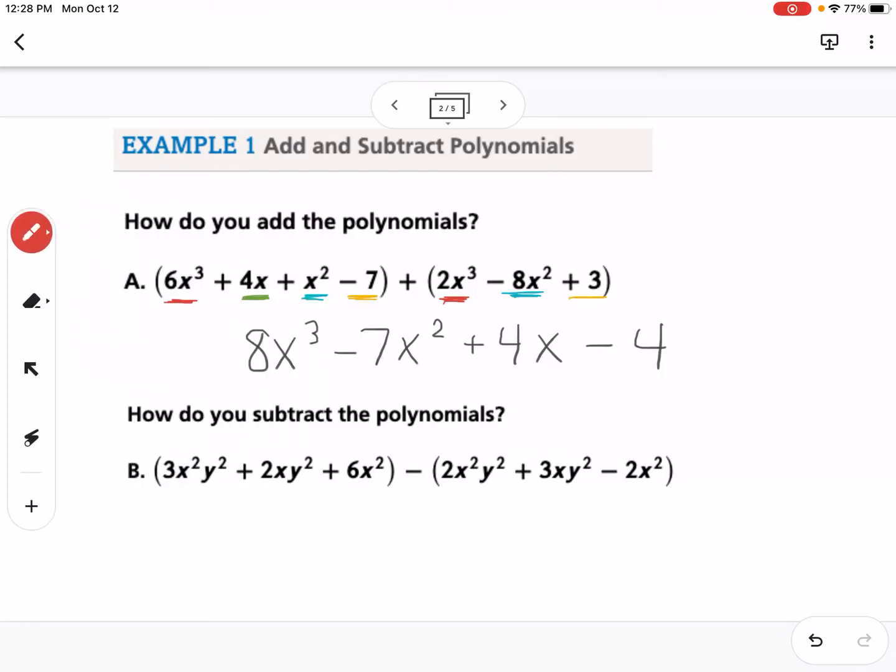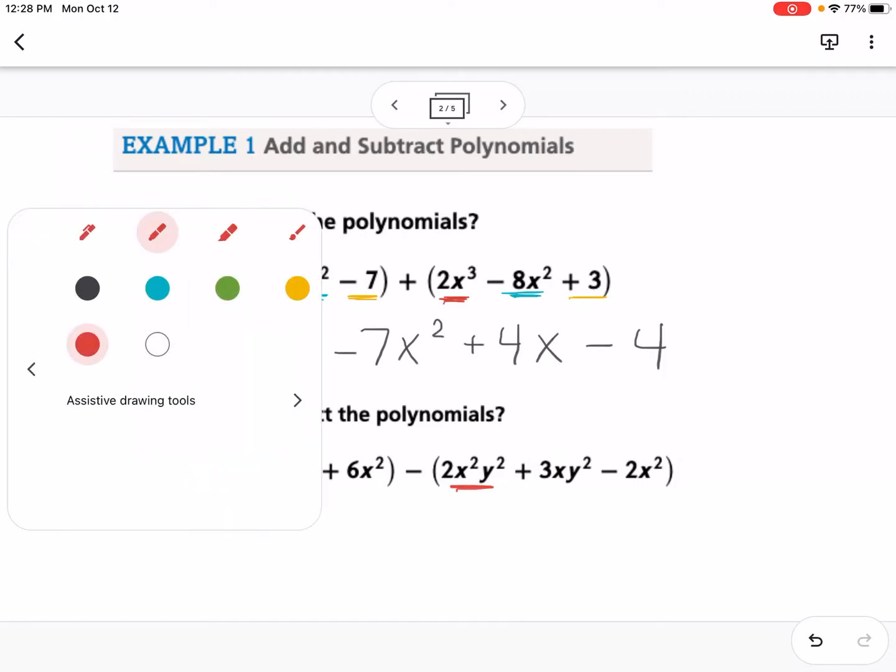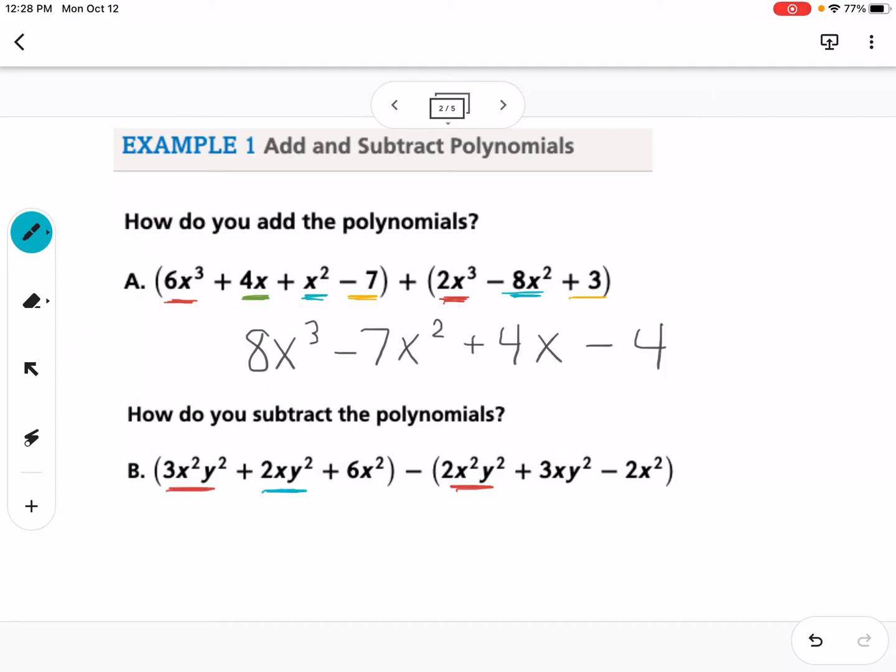Now if we go down here, I'm going to highlight the like terms again. So here's a 3x squared y squared and a 2x squared y squared. Here's a 2xy squared and a 3xy squared. And then here's a 6x squared and a negative 2x squared. Okay, so if I start with the x squared y squareds, 3 minus 2 is just 1. So I can just write 1x squared y squared, or I can just leave it as x squared y squared. Then I have 2xy squared minus 3xy squared, so that would be minus xy squared. And then I have 6x squared minus negative 2x squared. So minus a negative is going to turn into a plus, so this would be plus 8x squared. So that is adding and subtracting.